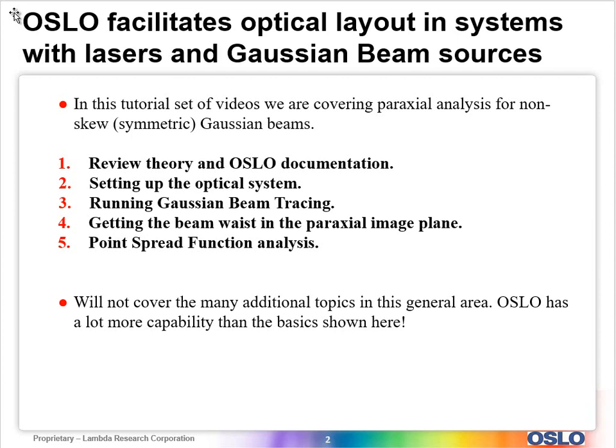We're going to review some theory and Oslo documentation in the first video. It's a five video set. The second video is to set up an optical system which will be a catalog lens. The third video will run a Gaussian beam tracing for the system to show you how that functions. Then we will in the fourth video show how to get the beam waist in the paraxial image plane.